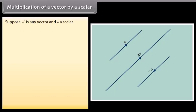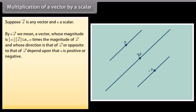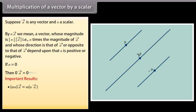Multiplication of a vector by a scalar: suppose vector A is any vector and N a scalar. By vector NA we mean a vector whose magnitude is |N| × |A|, that is N times the magnitude of vector A, and whose direction is that of vector A or opposite to that of vector A, depending on whether N is positive or negative. If N = 0, then 0 × vector A = 0. Important results: MN vector A = M(N vector A); N(vector A + vector B) = N vector A + N vector B; (M + N) vector A = M vector A + N vector A.